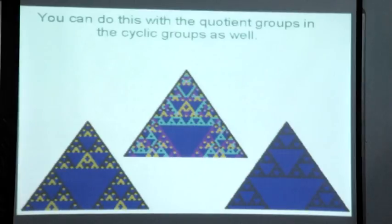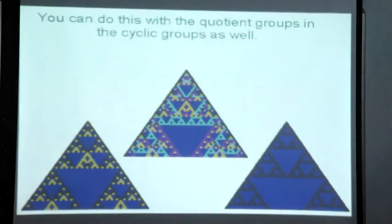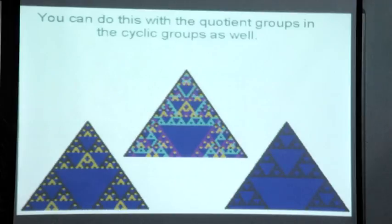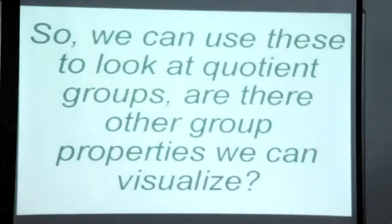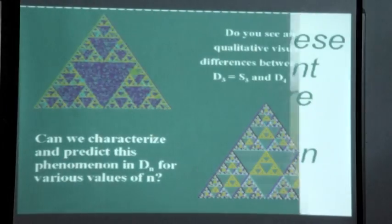If you mod out by A3 you get Z2, and you can do this with quotient groups on cyclic groups as well. I won't go into the definitions of quotient groups — you can look those up. We can use this to look at quotient groups and visualize other group properties.